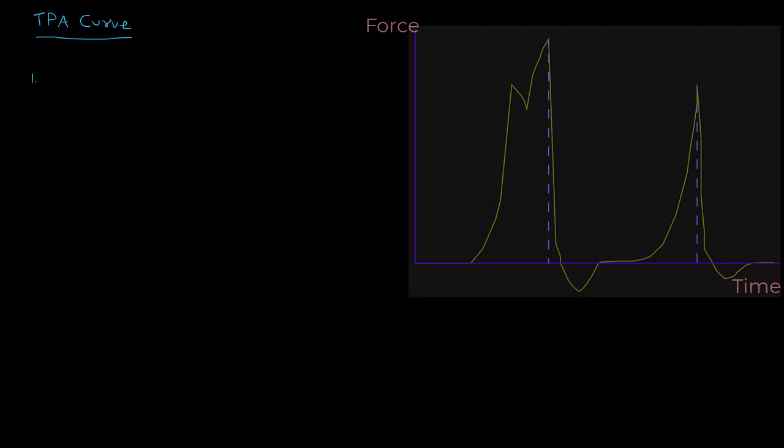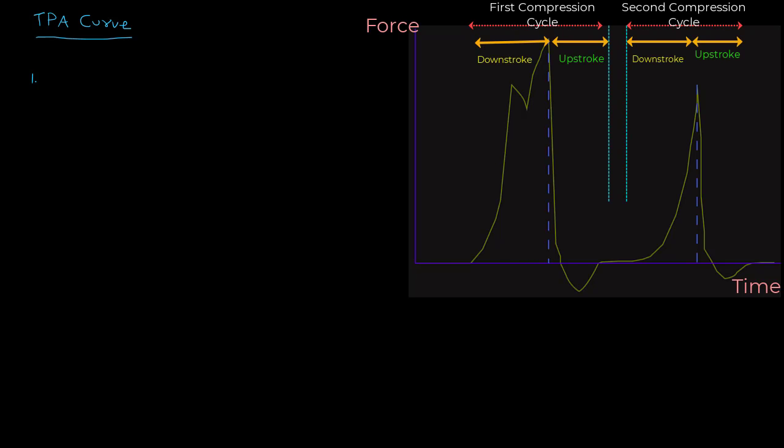And that curve that we get from this instrument is called the texture profile for that particular food. This profile is shown in the figure where we have force on the y-axis and time on the x-axis. There are two compression cycles. Each compression cycle has a downstroke and an upstroke. Each compression cycle also represents a bite that a food sample may experience during mastication.